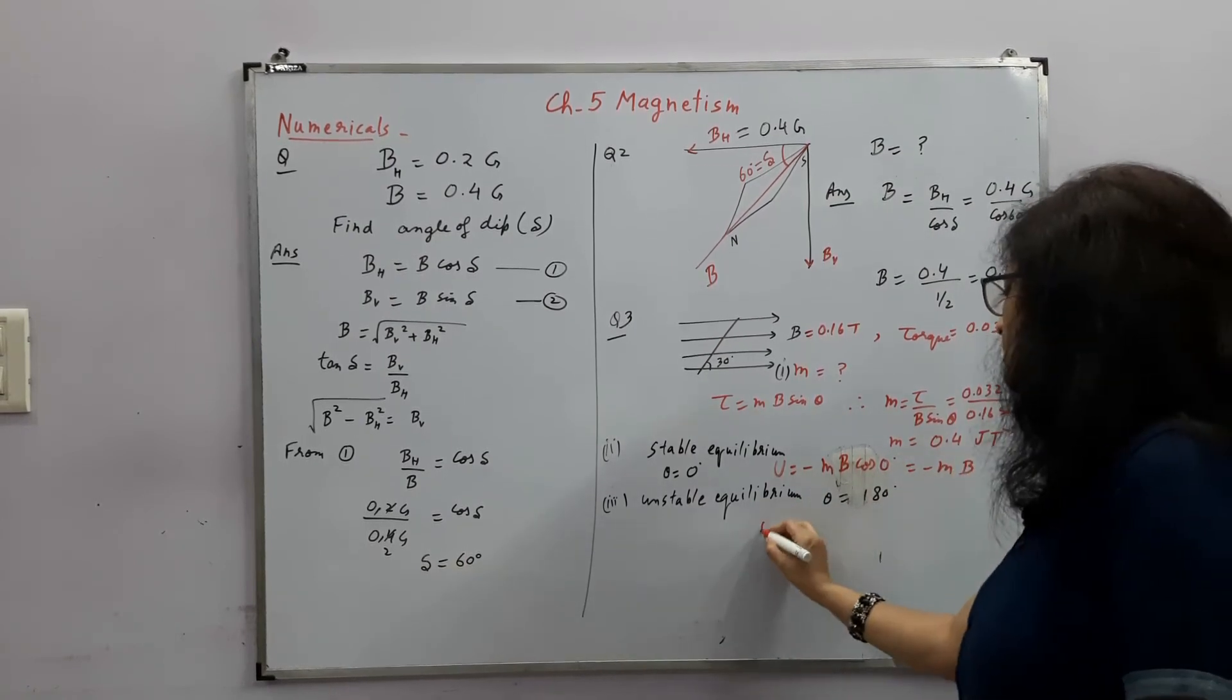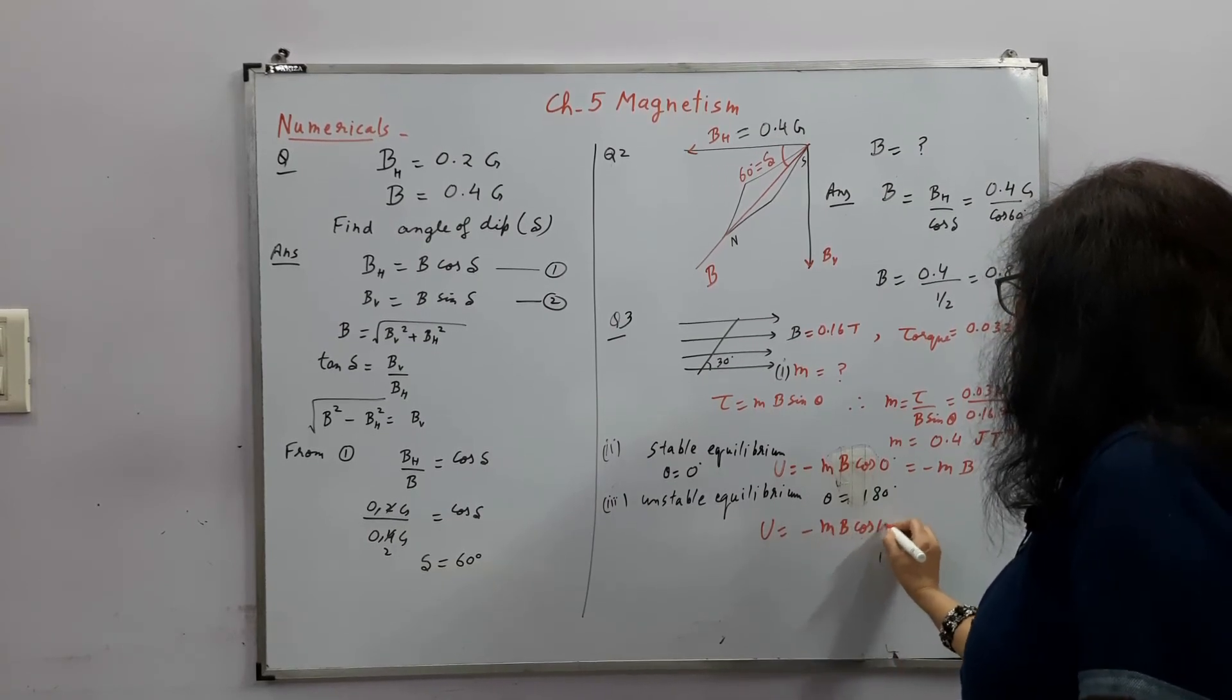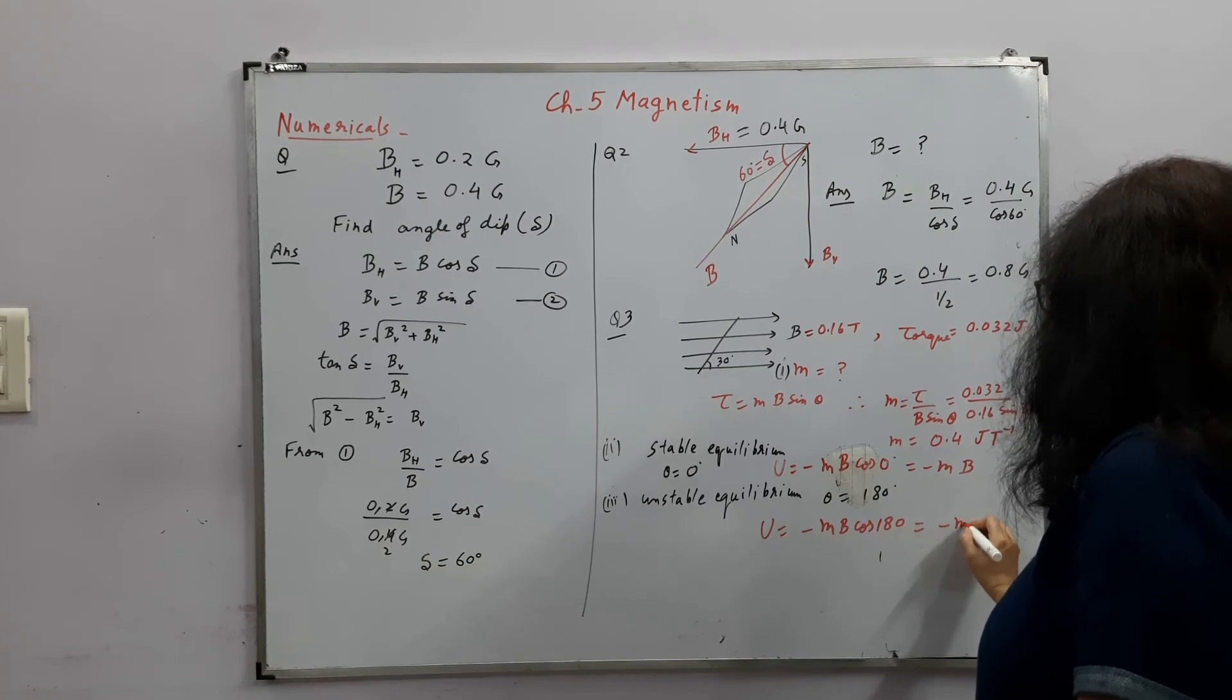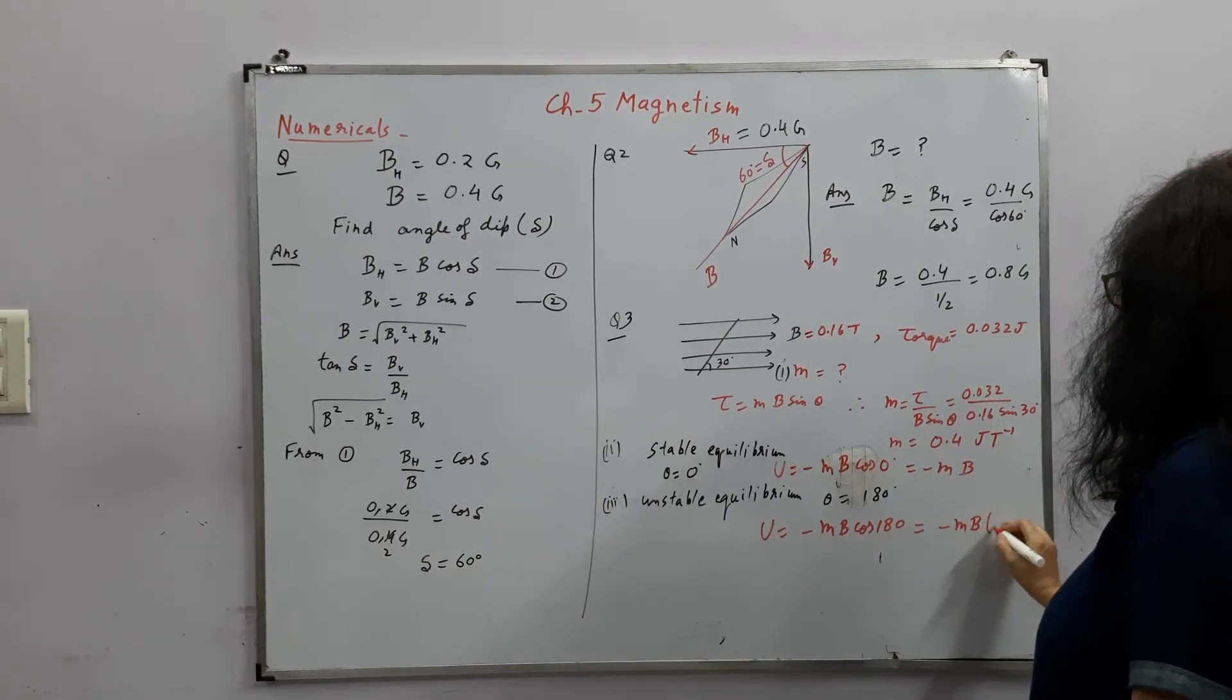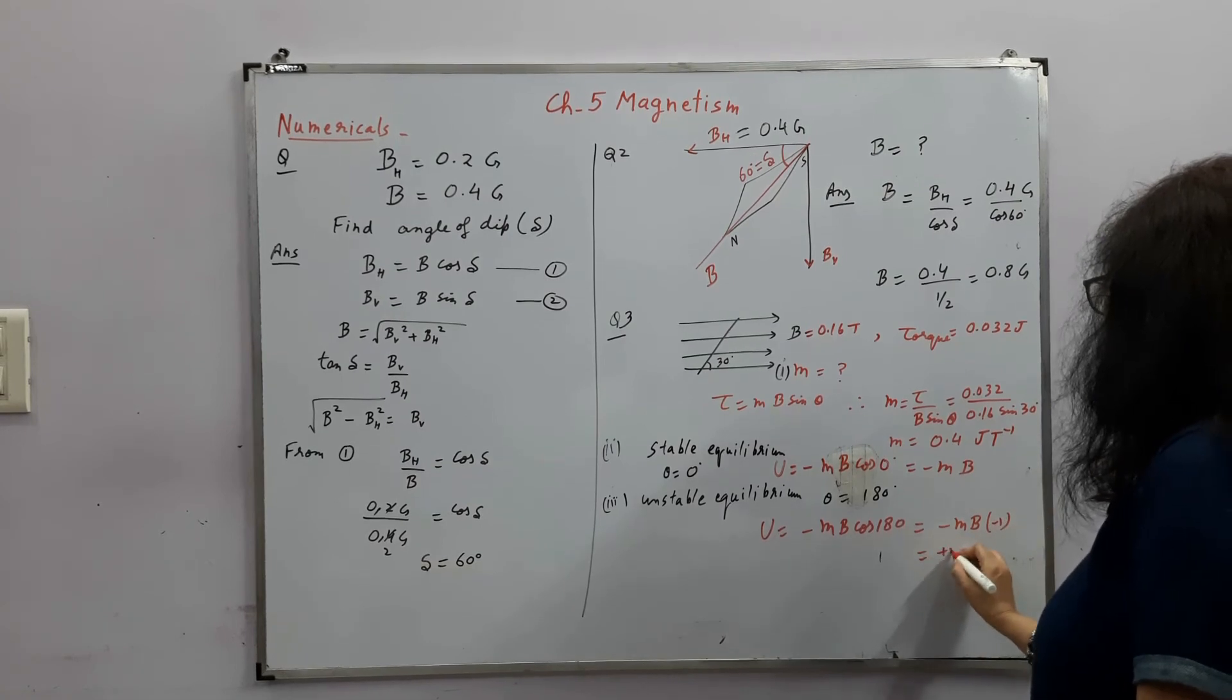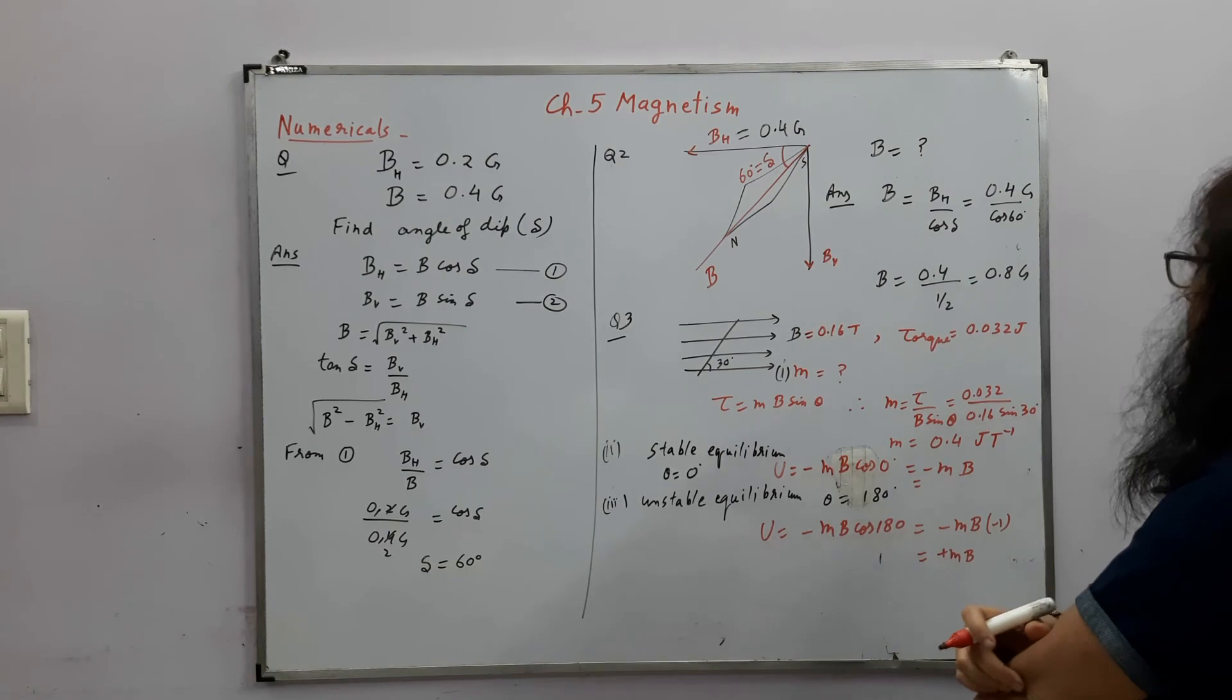And for this the potential energy will be minus Mb cos of 180. So this gives me minus Mb cos of 180 means minus 1. So this will give me plus Mb. Put the values and get the answer.